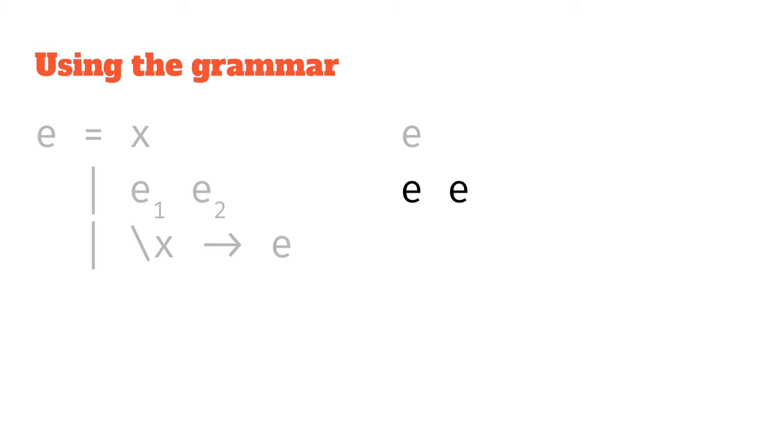Let's take the first one, and we say, okay, how do we expand this? What rule can we use to expand this? Well, let's say we want to use the function abstraction rule. That's E equals backslash X arrow E, and so we're going to pop that in.